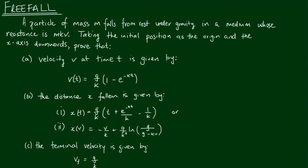I got this problem out of an old textbook. A particle of mass m falls from rest under gravity in a medium whose resistance is mkv — mass times some constant times the velocity. Taking the initial position as the origin and the x-axis downwards, we'll prove the given results. Before we dive into the problem, let's start by drawing a few diagrams depicting the problem in pictures.